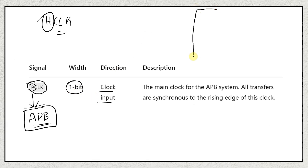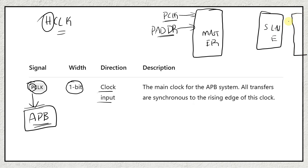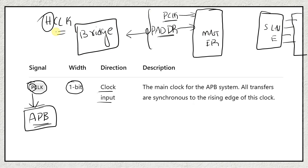So this is our APB interface, and for this we have PCLK. We also have PADDR. The master interface receives signals from the bridge, which converts all AHB-related signals to APB-related signals. The master then communicates with the slave, which is connected to the peripherals. This is how communication is established.